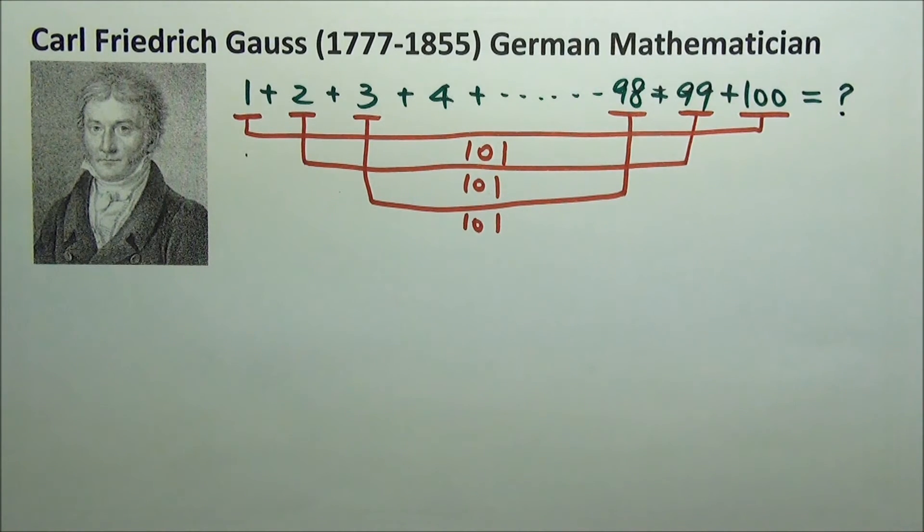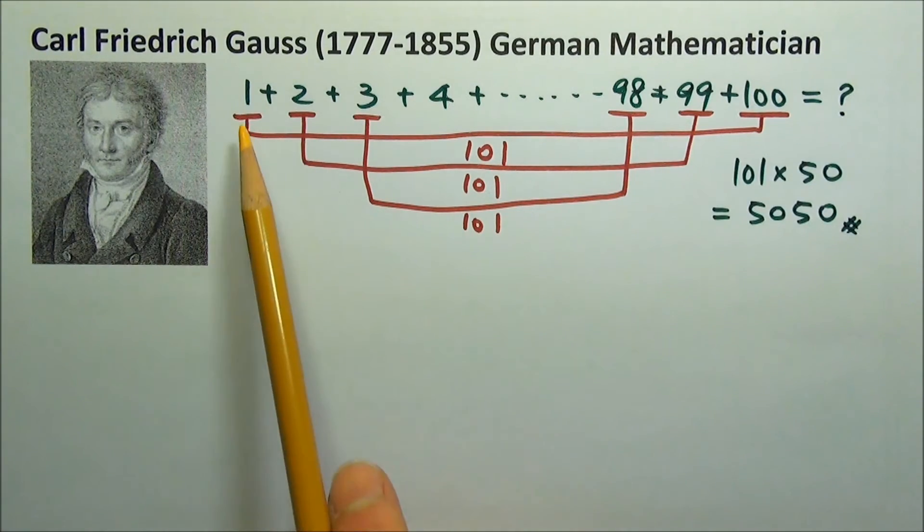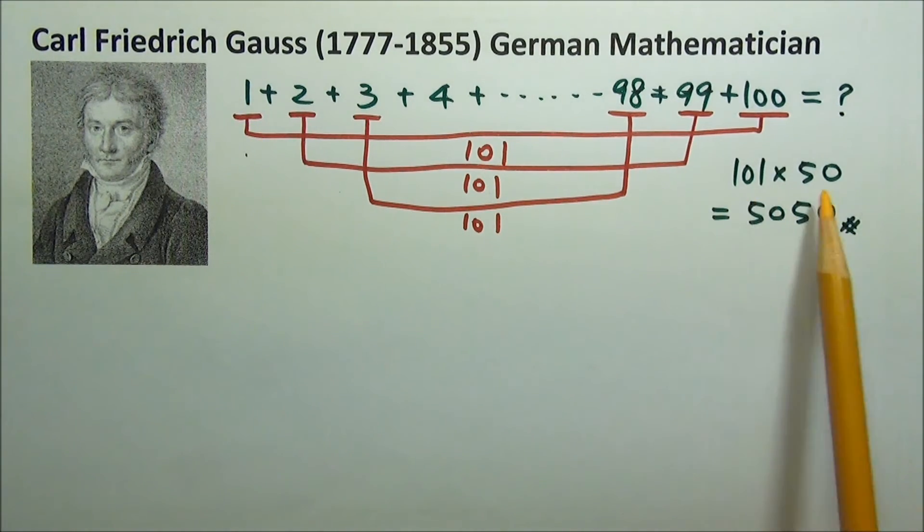So how many such pairs do we have? 50. Therefore, the sum is 101 times 50, which equals 5050.